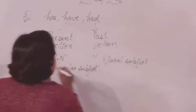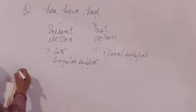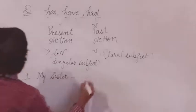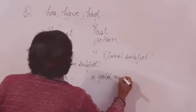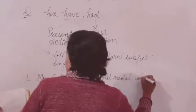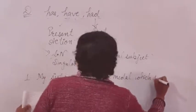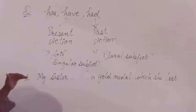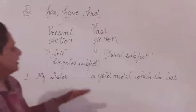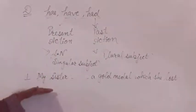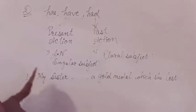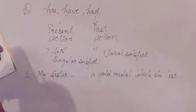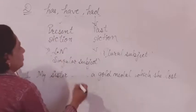Let's understand using these rules. First sentence: My sister blank a gold medal which she lost. This sentence tells us about an action that happened in the past — my sister had a gold medal which she lost. Since it's a past action, we use had here.